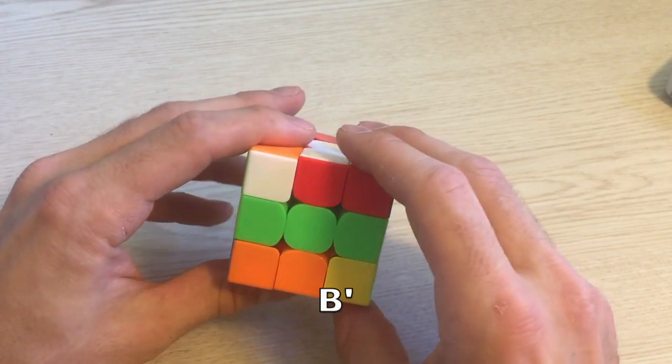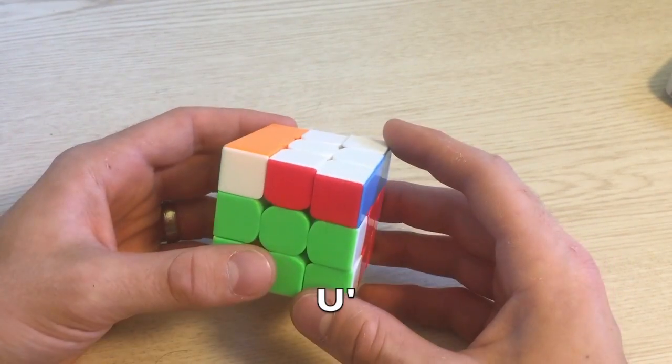The opposite then would be true for B' and D' done with my right hand, and U' and F' move with my left hand.